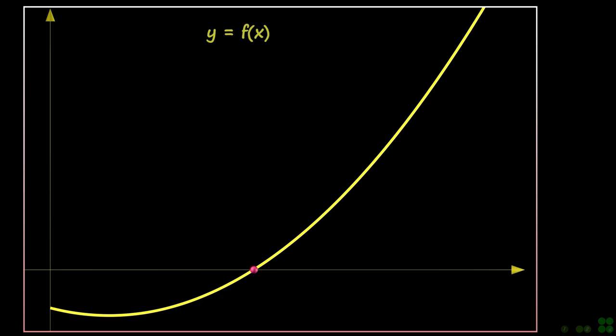Consider a function f of x. We want to solve it for the value of x where f of x is zero. This point is shown by the red circle.